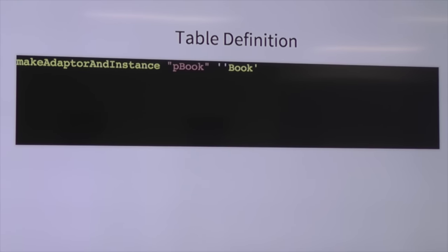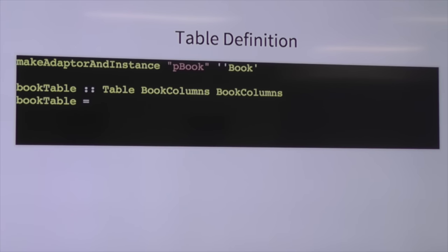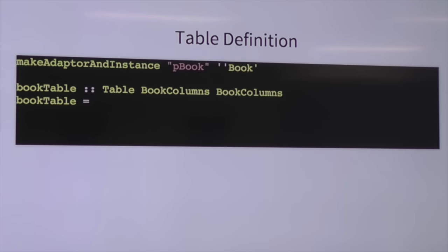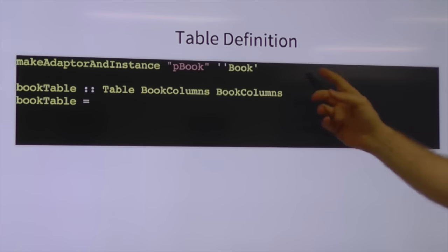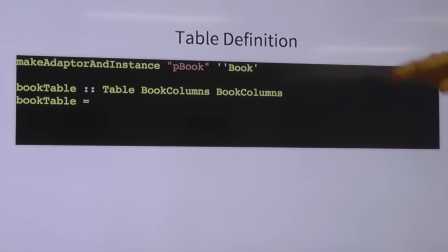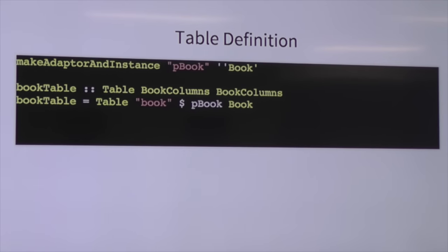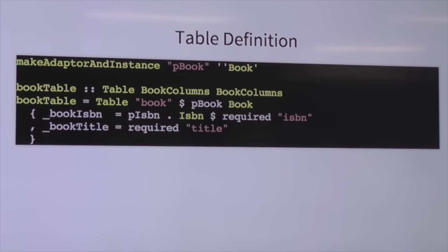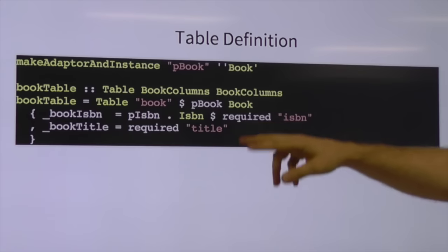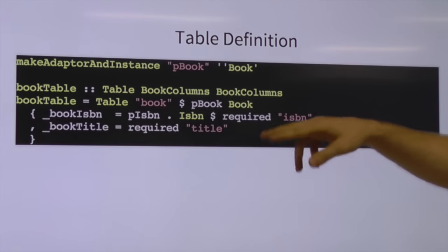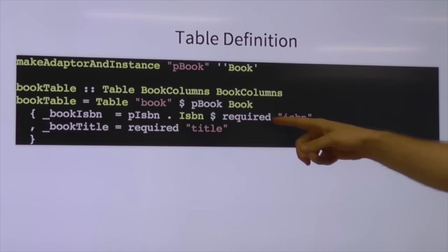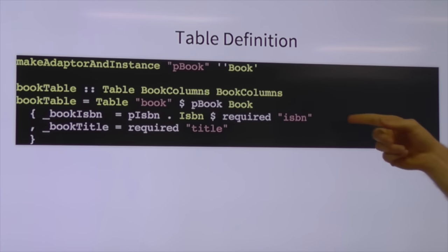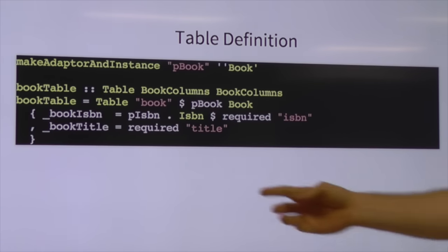If you want to see all the different types Opaleye already has defined — you can define your own, especially if you have custom enumeration types or extended types in Postgres — all the stock standard ones are defined in `Opaleye.PGTypes`. Now let's move on to the table definition. We start by saying we want a table made out of book columns. The only boilerplate for our data types in Opaleye is generating the `makeAdapterAndInstance`. It generates our `pBook`, which we'll see in a bit.